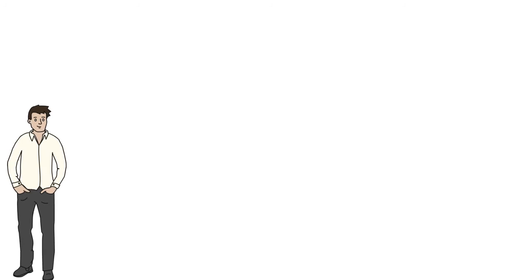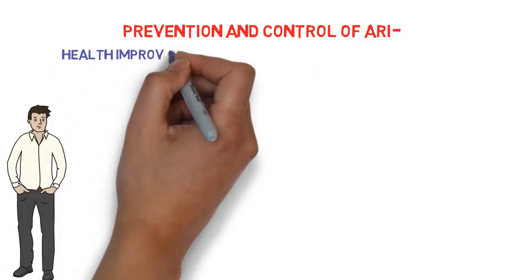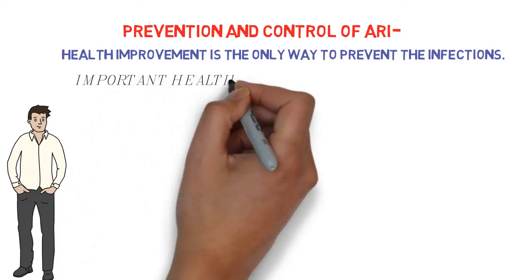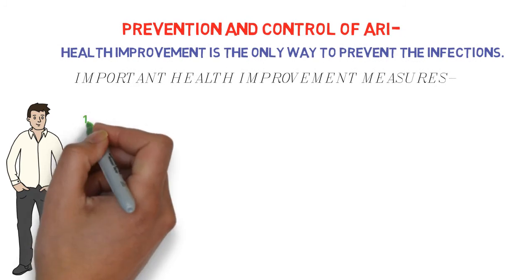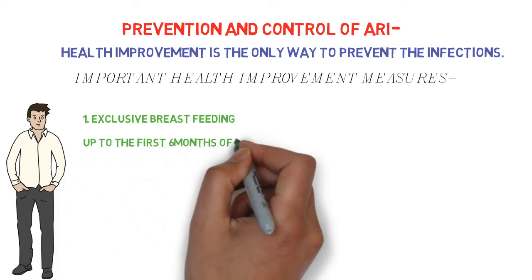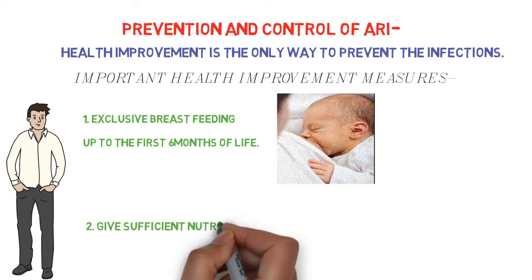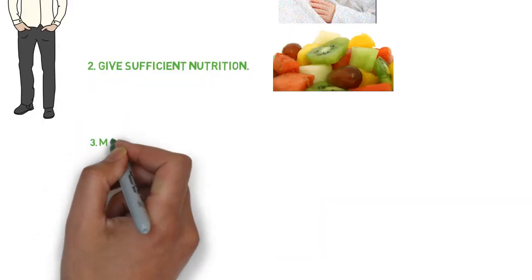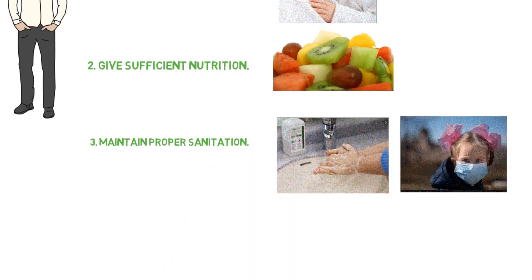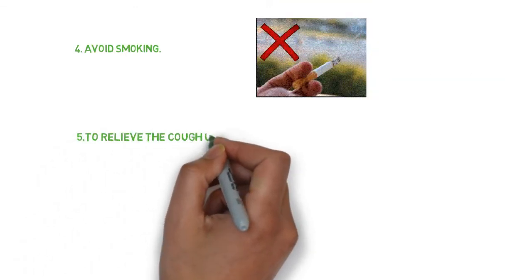Now we will know some easy ways to prevent and control the infection. First of all, health improvement is the only way to prevent the infection more easily. Some important health improvement measures are: number one, promotion of exclusive breastfeeding up to the first six months of life that will increase the child immunity; number two, give sufficient nutrition for growing children; number three, improvement in the living condition, that is maintain proper sanitation; number four, avoid smoking.